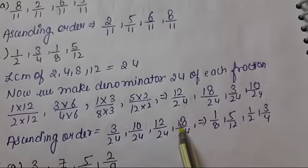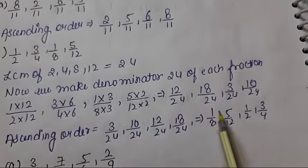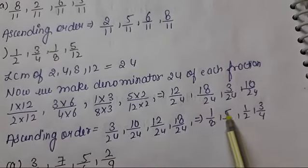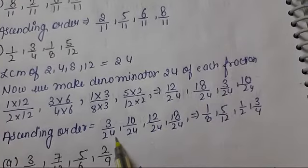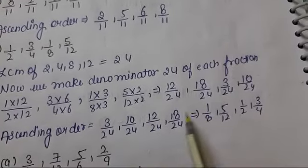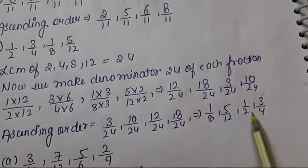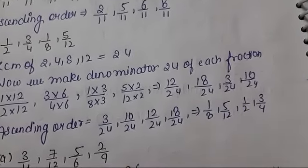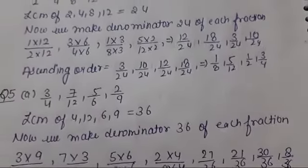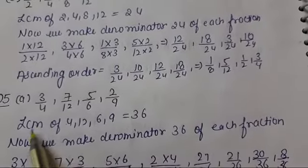Then arranging in ascending order: 3 upon 24, 10 upon 24, 12 upon 24, and 18 upon 24. Simplifying, we get 1 upon 8, 5 upon 12, 1 upon 2, and 3 upon 4. Question number 5 is 3 upon 4,